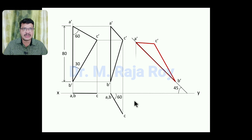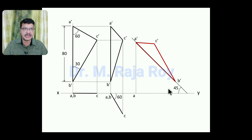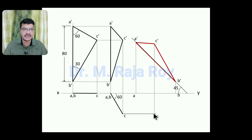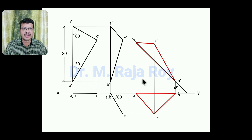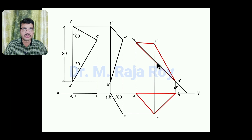Now draw the projectors. This is the projector of A dash. Here is the locus of A and B — here you are going to get A. This is the projector of B dash; this is the locus of B — here you are going to get B. This is the locus of C; this is the projector of C dash — here you are going to get C. Join A, B, C — this is the final top view. In this way, you can draw the projections of the 30-60 set square when the surface is inclined 60 degrees to VP and its longest edge is inclined 45 degrees to HP.